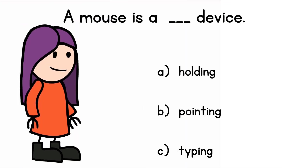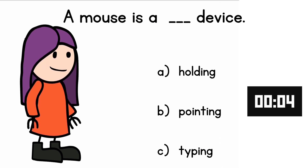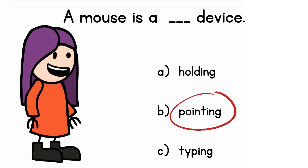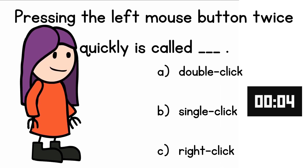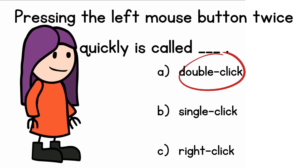The mouse is a pointing device. The answer is pointing. Pressing the left mouse button twice quickly is called double click.